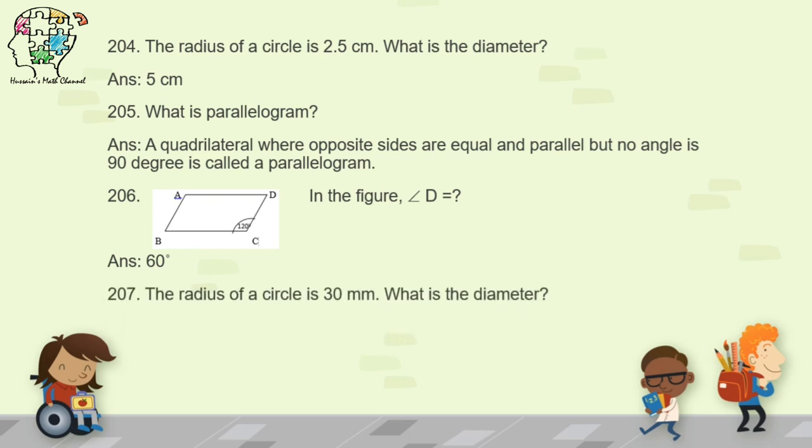Question 207: the radius of a circle is 30 millimeters — what is the diameter? The diameter is double the radius, so the diameter will be 60 millimeters.